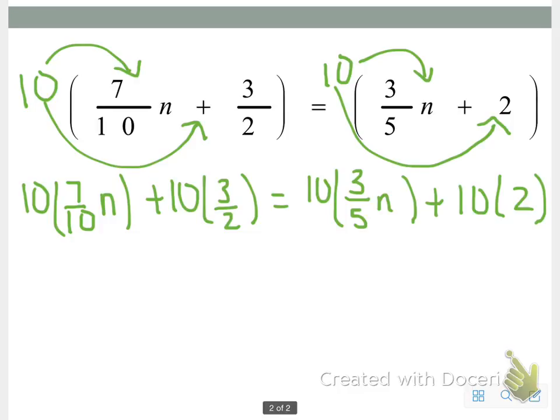Now, as you can see, we can do a lot of reducing, which we will do now. 10 divided by 10 is 1, which is 1 times 7 is 7n, plus we'll continue reducing. 5 times 3 is 15. Continue reducing. 2 times 3n is 6n plus 10 times 2 is 20.